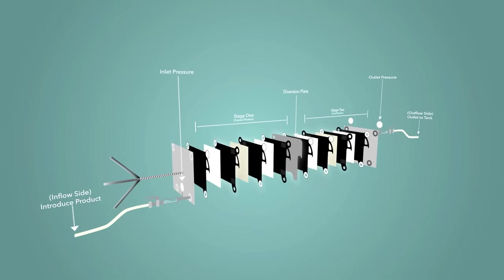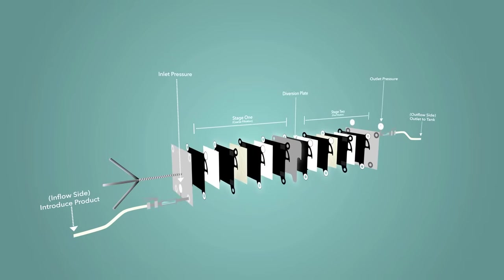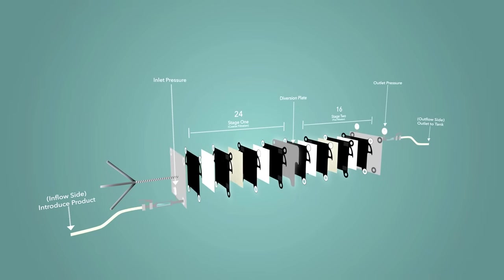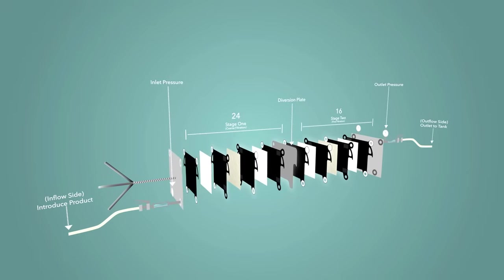For example, in a 40-plate filter, the stages can be broken up half and half, 20 plates on each side, or 24 to 16, to add capacity to one stage or the other.